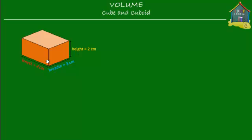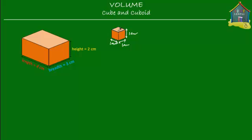In the case of this cuboid, the volume is equal to the number of unit cubes that it will take to make that solid object. To find out its volume, we're going to find out how many of these unit cubes — these little cubes — it will take to make this cuboid. Since all these dimensions are in centimeters, the unit cube we'll use will be a centimeter cube.